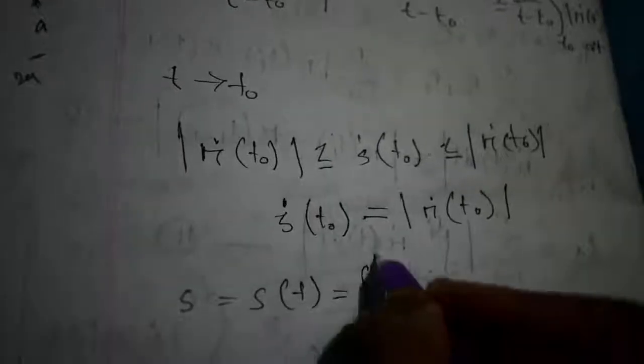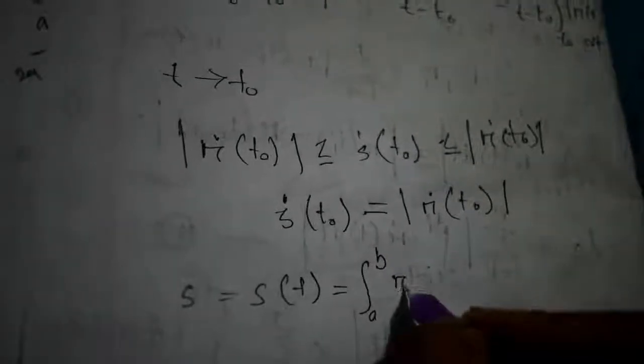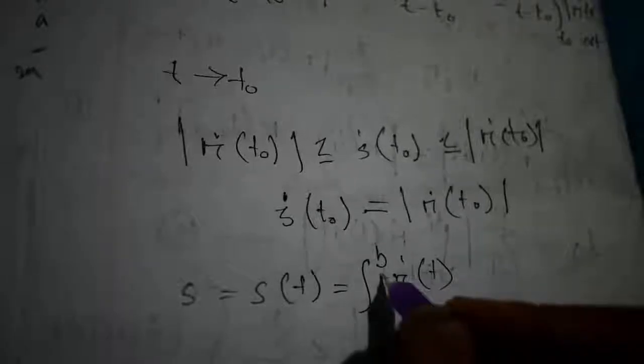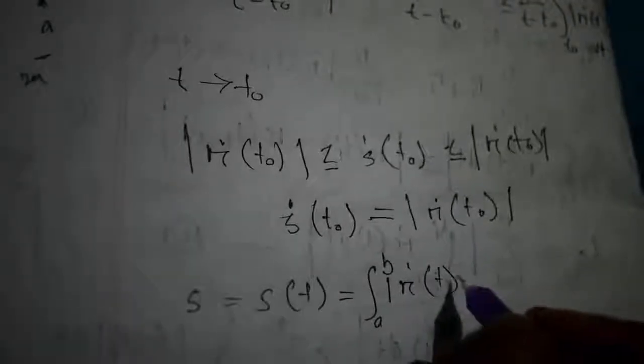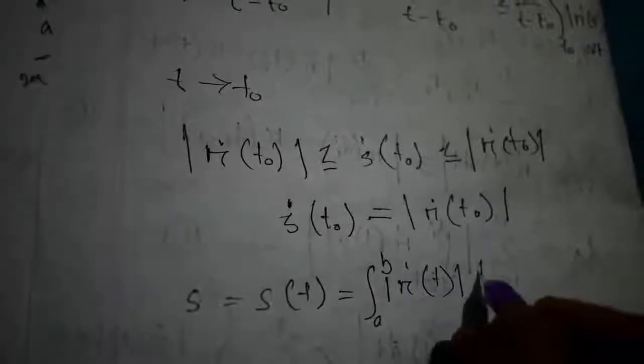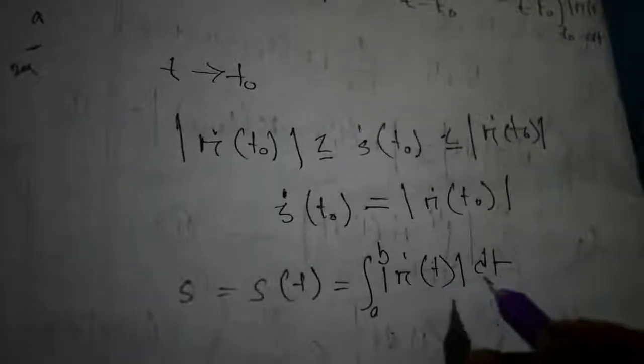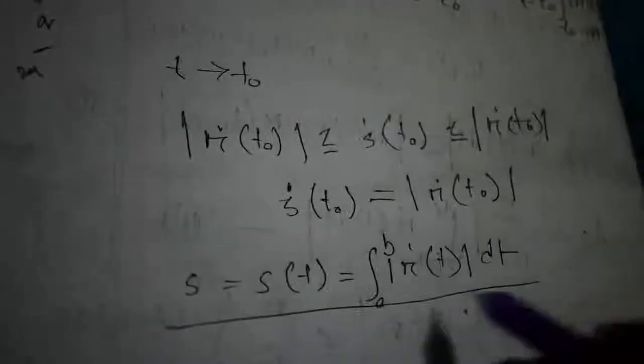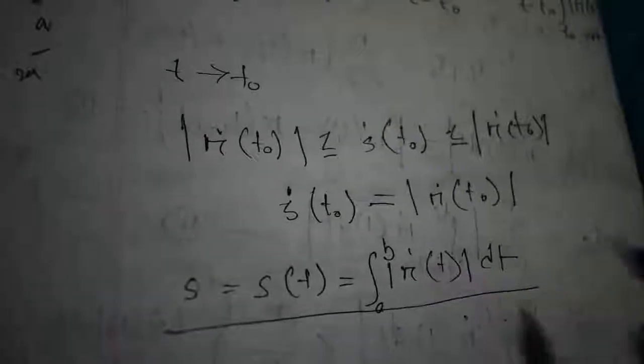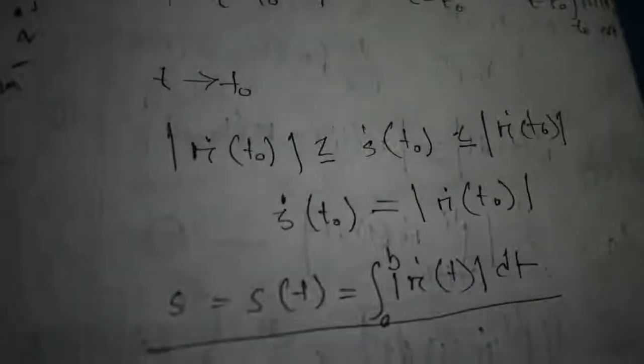Therefore we have s equal to s(t) equal to the integral from a to b of |ṙ(t)| dt. This is the arc length between a to b of the curve.